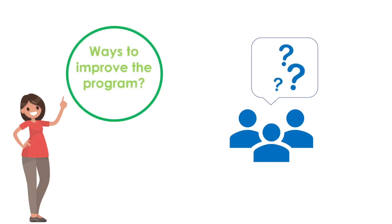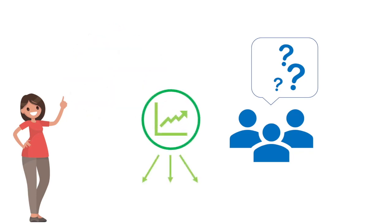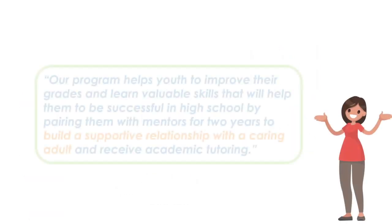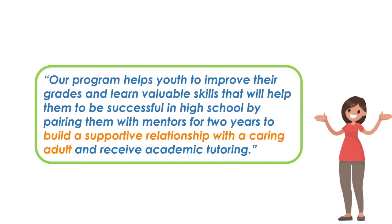Our team met to start thinking about ways to improve the program. Based on conversations with students and parents, we learned that we needed to do a better job of making students feel supported. We also talked about the importance of analyzing data over time, especially by race, ethnicity, and gender, to understand how effective our program was for all groups of youth. We still believe that pairing middle school students with an academic tutor for two years would better prepare them for success in high school, but we revised our theory of change slightly to recognize the importance of making sure tutors develop supportive relationships with students in the program.